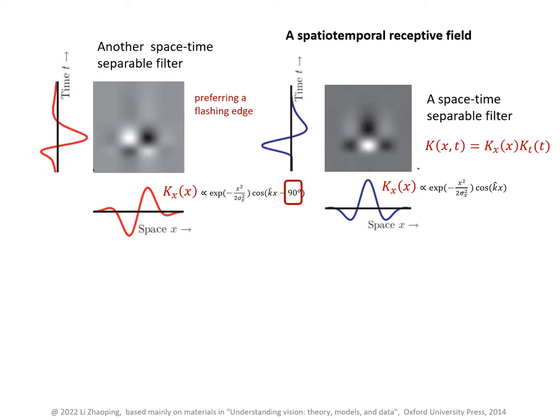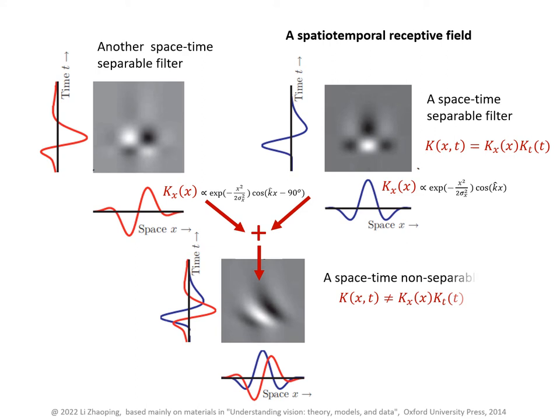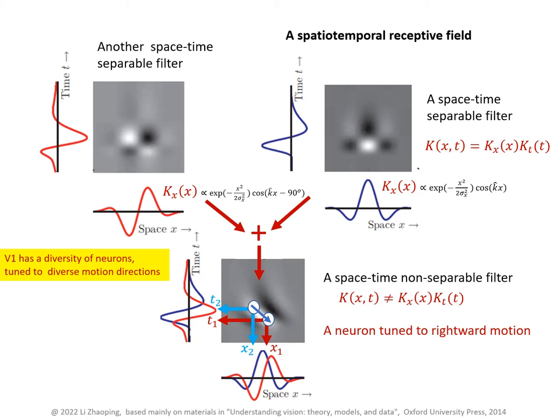Combining these two filters can give a space-time non-separable filter. Its current response can be excited by a white bar at location x1 at time t1 in the past, and also by a white bar at location x2 at a longer time t2 in the past. So this filter's current response prefers a movement by a white bar from x2 to x1 — a rightward motion during the time window t1 to t2 in the past. So this neuron is a motion-direction-selective neuron.